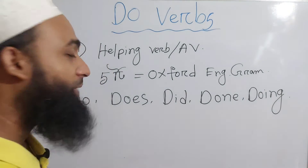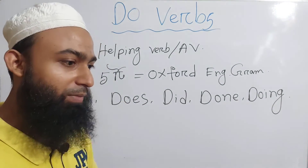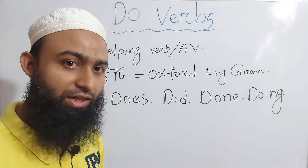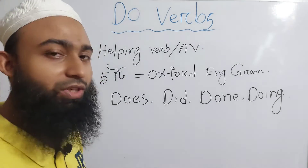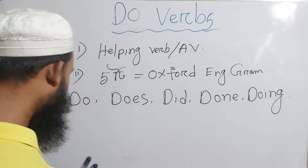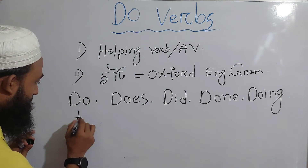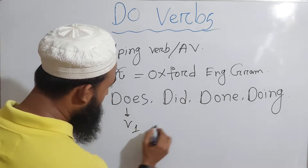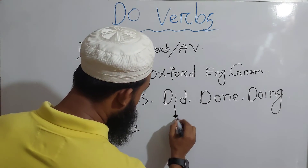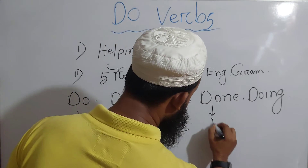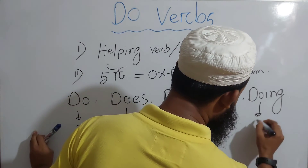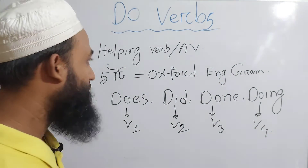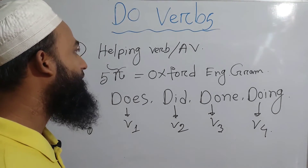Now regarding the verbal forms — you should know all the verb forms. From the decoration channel, let me make it clear: we have V0, V1, V2, V3, and V4. The V4 form is made by adding -ing. So the verb forms for 'do' follow this pattern based on the Oxford English Dictionary.